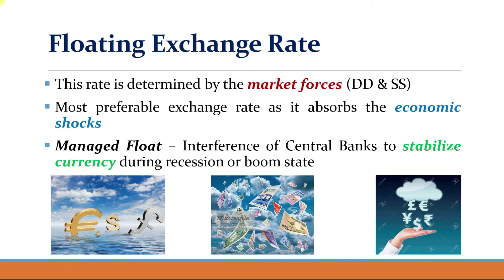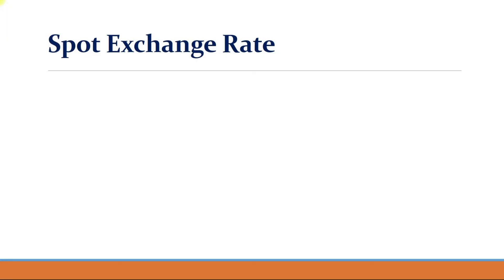The reason it is called a managed float is that whenever the situation demands, central banks of that particular country intervene — mainly during recession or boom periods. For example, when the Indian rupee is depreciating excessively against the US dollar, the RBI will start selling US dollars and buying Indian rupees, causing demand for Indian rupees to go up and demand for US dollars to go down, stabilizing the currency. Conversely, if the rupee appreciates more than expected, the RBI will sell Indian rupees and buy US dollars.